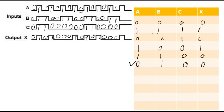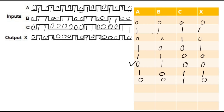Next: 1,0,1 is giving you output 1. We don't have this entry yet, so let's write it: A=1, B=0, C=1, X=1. Next is 0,0,1 giving you 0. We don't have this either, so write: A=0, B=0, C=1, X=0. So this completes our truth table combinations.